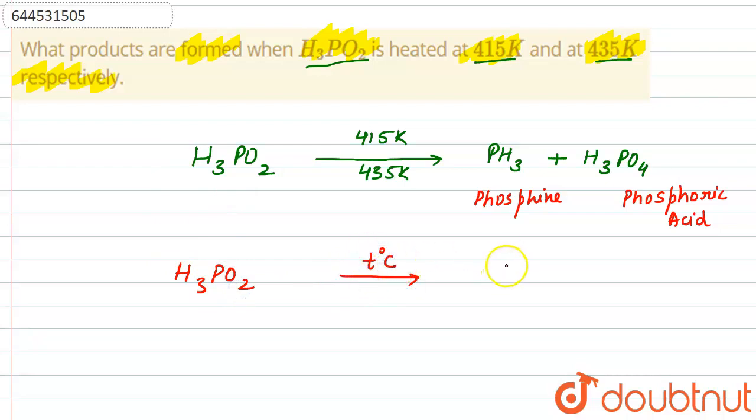...certain temperature, the products we will get will be PH3 plus H3PO3. Phosphine is common. And the product that changes is: here we have H3PO3, in the above we have H3PO4.